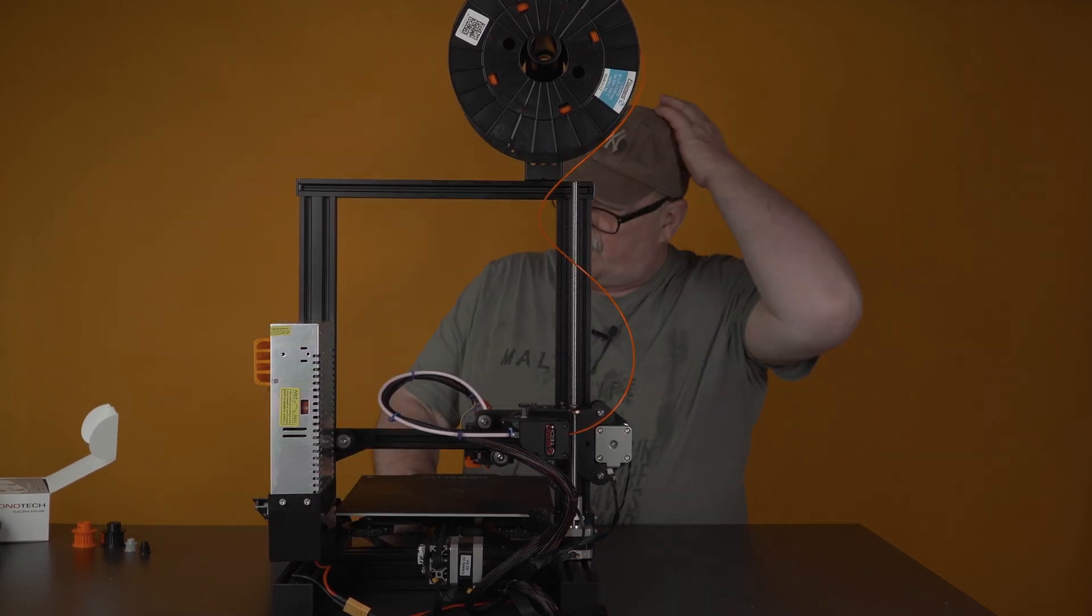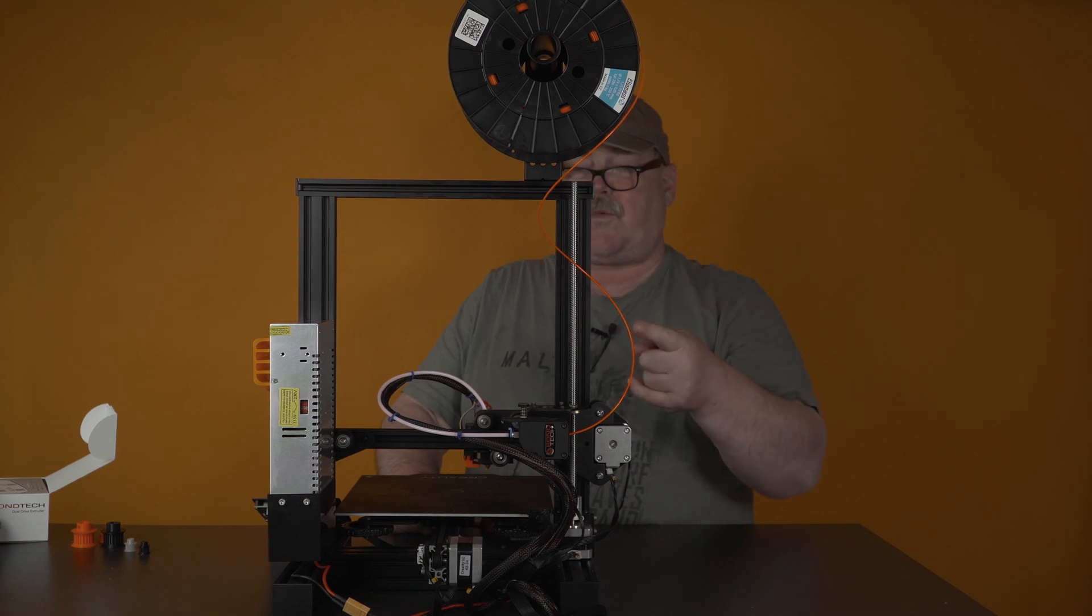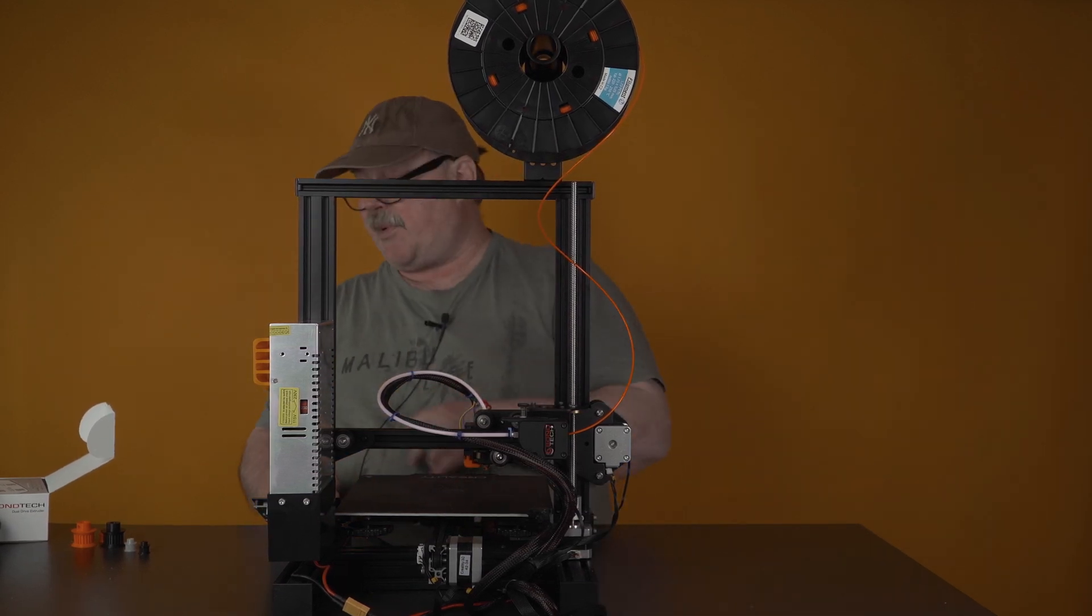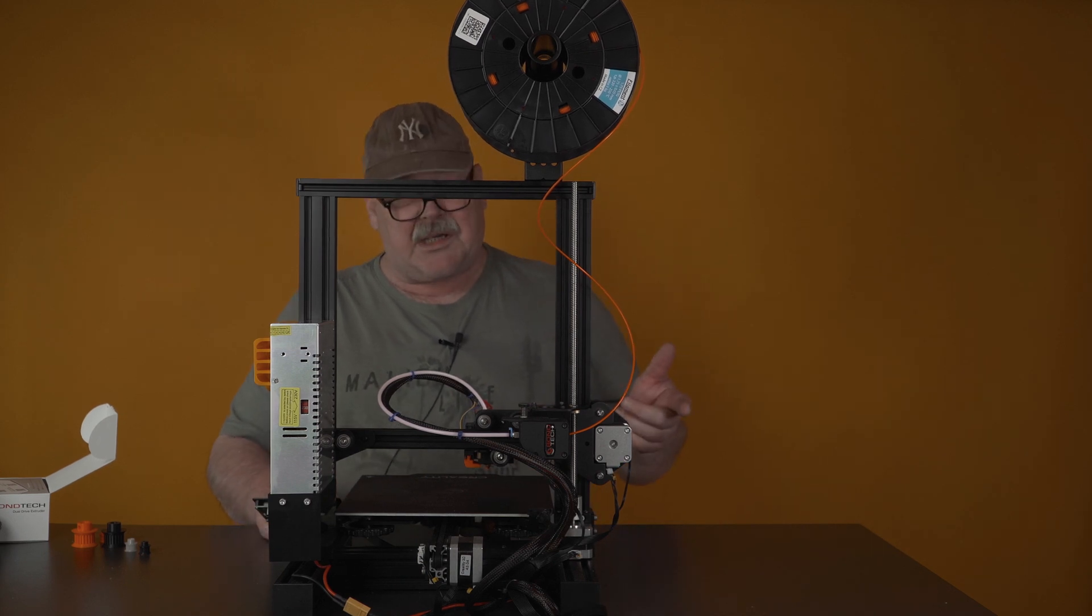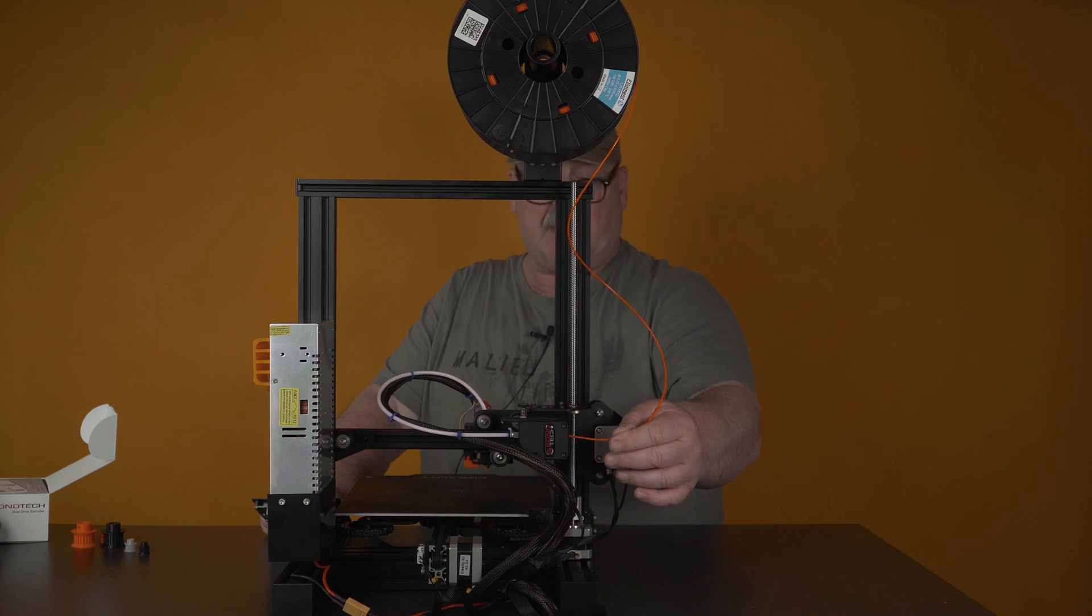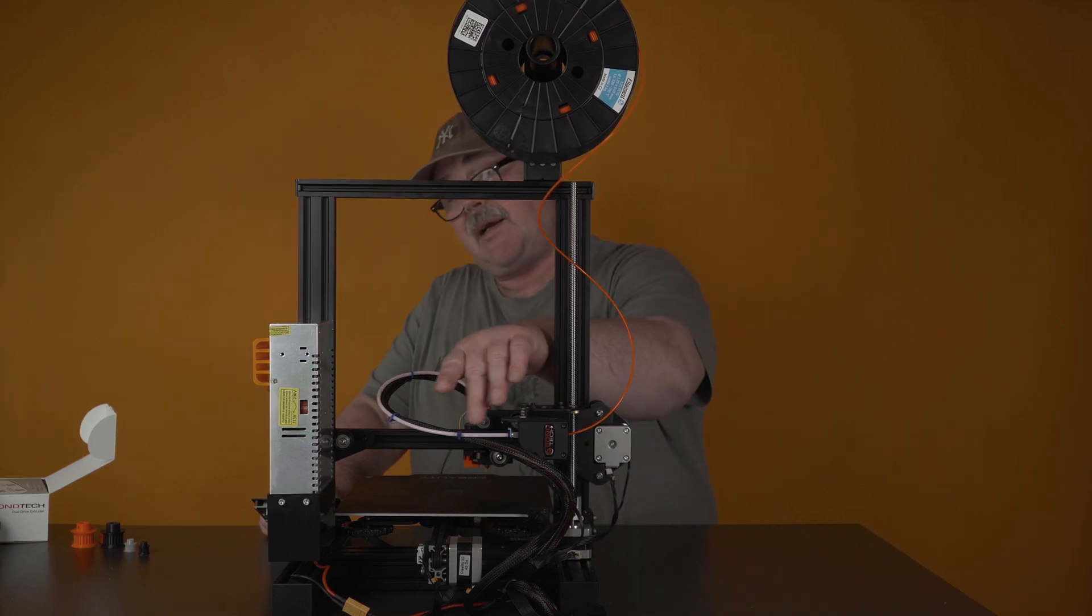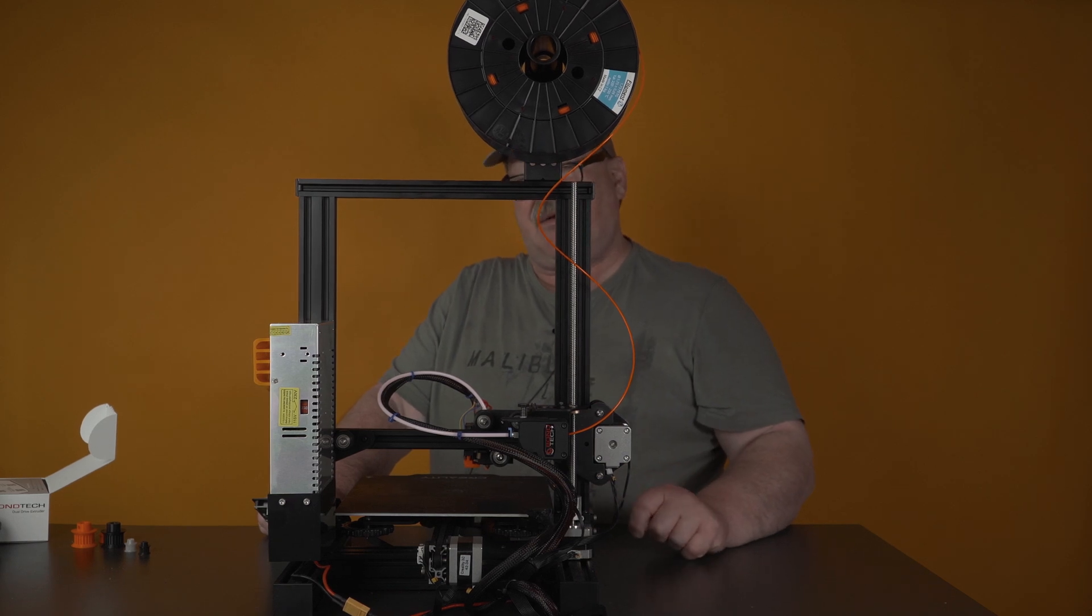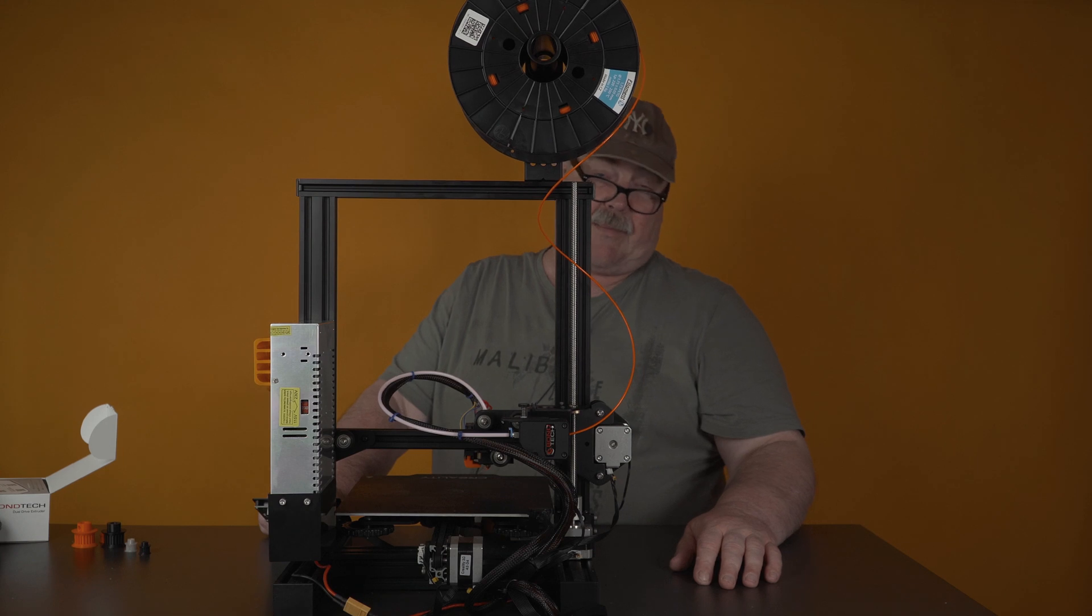Then I use my load script. I made a load script that is special for the flex filament. Because you cannot run with the same speed as you can do with the PLA or the PETG. So I took one that is loading and takes a little bit more longer time. But it's really running marvelous inside, through the Bowden tube, to the nozzle. And it works absolutely perfect.